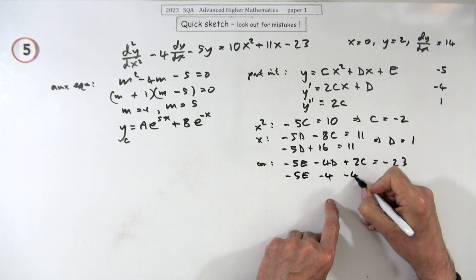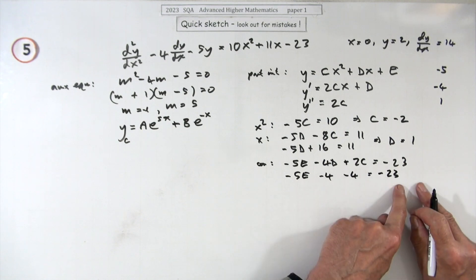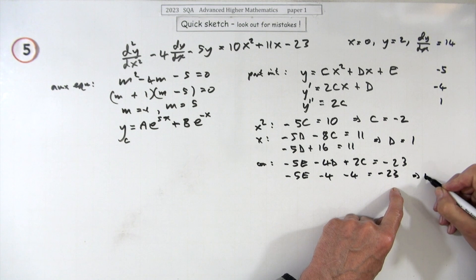And that's another minus four should equal negative 23. So that's minus eight, we'll go across as plus eight, that's minus 15, divide by negative, that means it's a three. So e is three.